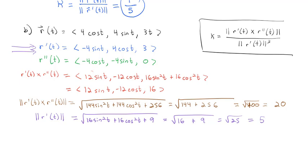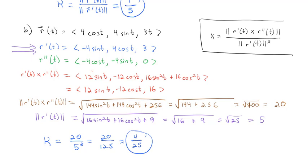Finally, we're ready to calculate the curvature of our vector-valued function. Curvature equals the magnitude of the cross product — which was 20 — divided by the magnitude of the derivative — which is 5 — cubed. That's 20 over 125, which simplifies to 4/25 as our final curvature. That's curvature in three dimensions, measuring how sharply a curve is turning.